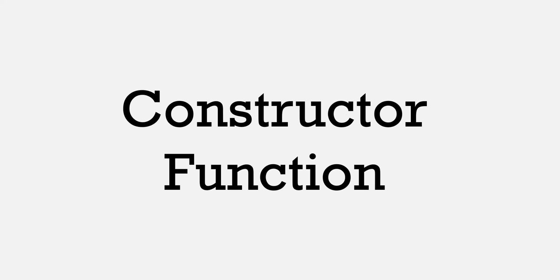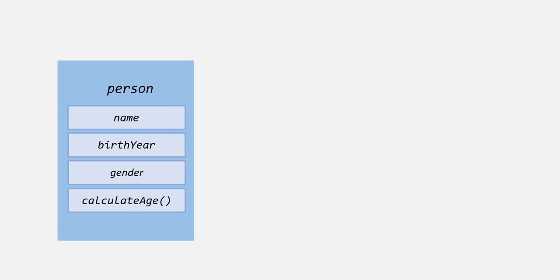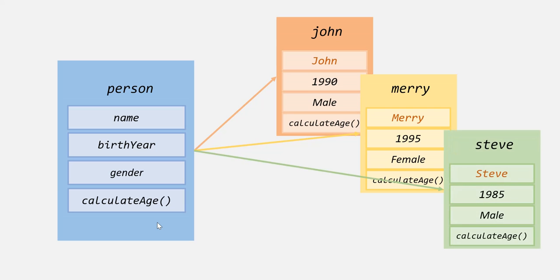In this lecture, you are going to learn what is a function constructor and what is its use in JavaScript. In the last lecture, we learned that one of the concepts of object-oriented programming is that we create a blueprint and based on that blueprint, we instantiate several objects. For example, let's say this person is a blueprint, and this blueprint has a name property, birth year property, gender property, and a calculate age method. Now based on this blueprint, we want to create objects like John, Mary, and Steve.